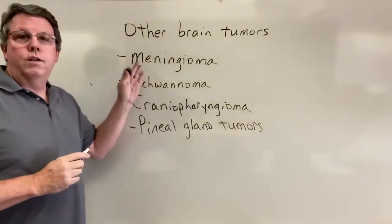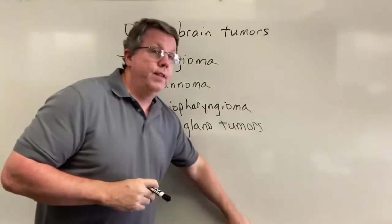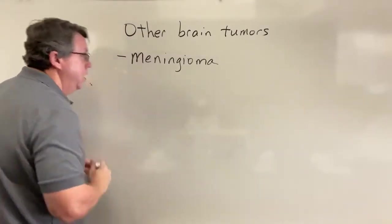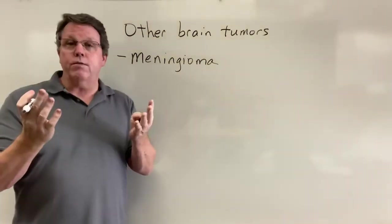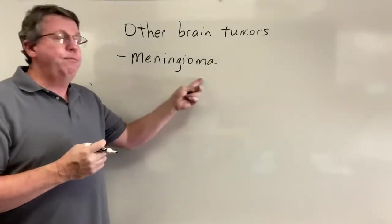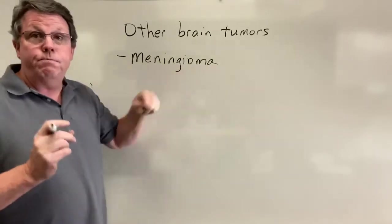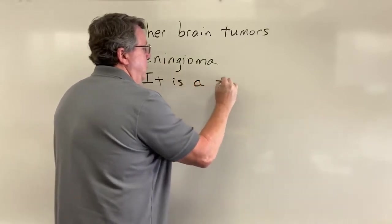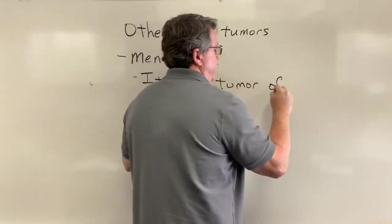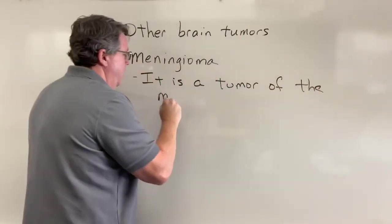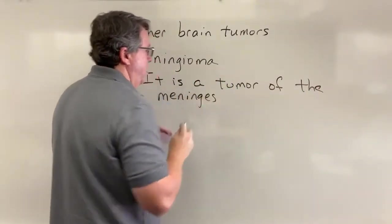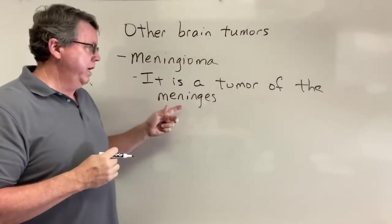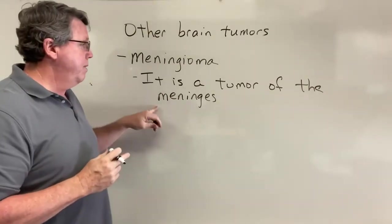A meningioma is a tumor of the meninges. Around your brain you have a protective covering — layers of tissue that protect the brain — and they are called meninges. So a meningioma is basically a tumor of the meninges, which are a covering that goes around the brain made up of three different layers.